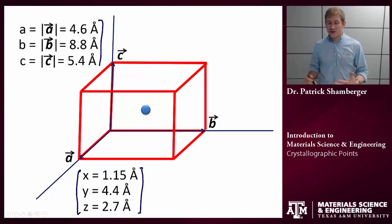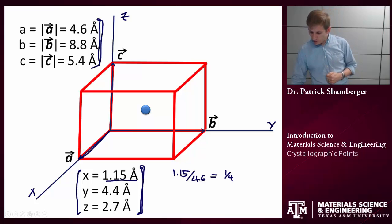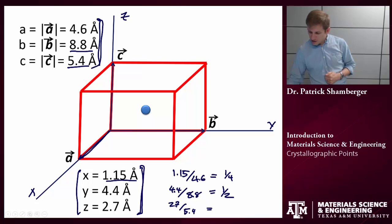In this case, I know the position of the atom. And I know the magnitude of the different lattice vectors. To get the fractional coordinates, I need to divide these lengths by the lengths of the original vectors. In the X direction, it's 1.15 angstroms. And we know the lattice vector A is aligned in the X direction. And it has a length of 4.6. So, 1.15 over 4.6 equals 1 quarter. We can do the same thing for Y. 4.4 over 8.8, which is the length of the B lattice vector. And this equals 1 half. And finally, for Z, we have 2.7 angstroms over 5.4 angstroms. And this also equals 1 half.